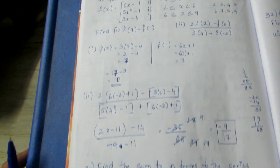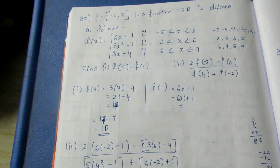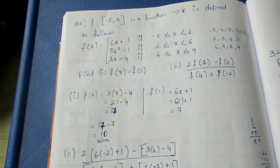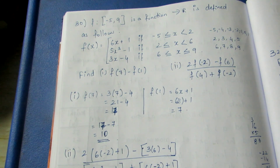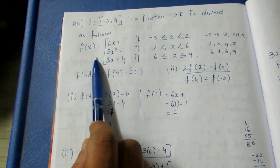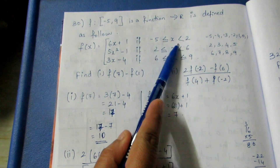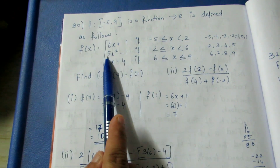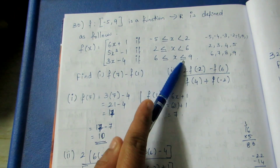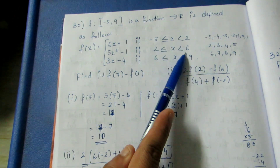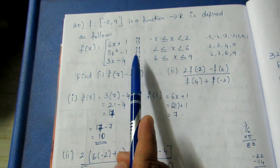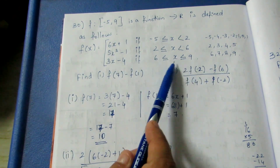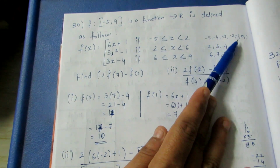Now the next sum: if f(x) = 6x + 1 when x lies between -5 and less than 2; if x lies between 2 and less than 6; and 3x - 4 if x lies between 6 and 9.